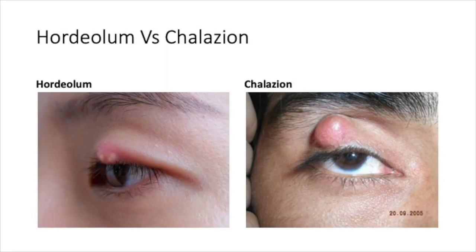External hordeolum rarely becomes a chalazion, but it can. However, the meibomian glands go deeper and are further from the lid margin, making them more prone to chronic inflammation. A hordeolum is acute — you'll have tenderness, pus, and a red, warm swelling — whereas a chalazion is chronic, non-tender, hard, and non-fluctuant.